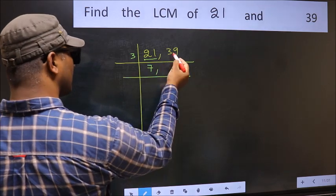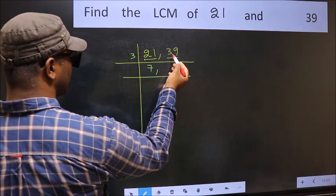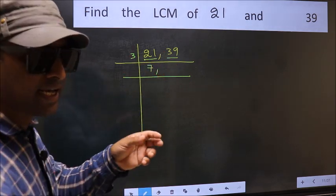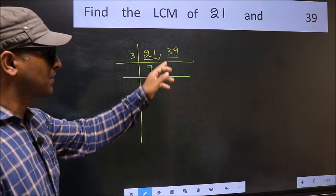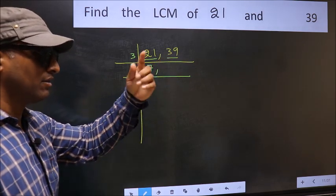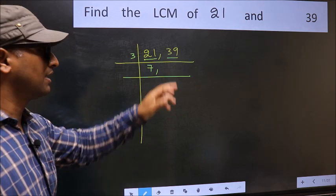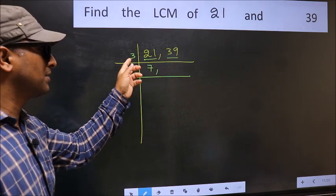The other number, 39. To check whether 39 is divisible by 3 or not, for that add the digits. 3 plus 9, we get 12. And 12 is divisible by 3, so this number is also divisible by 3.